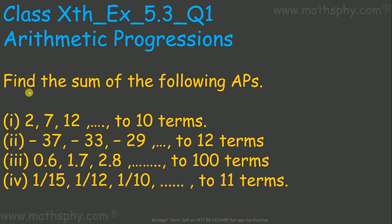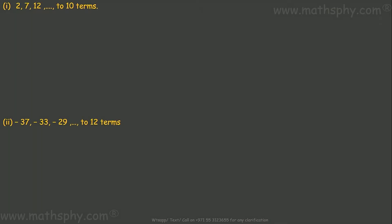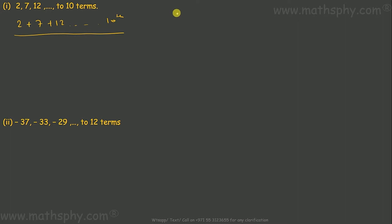This question says: find the sum of the following arithmetic progressions. We have the progression 2, 7, 12 up to 10 terms. The formula to make this easier is: sum equals n over 2, multiplied by the first term plus the last term.